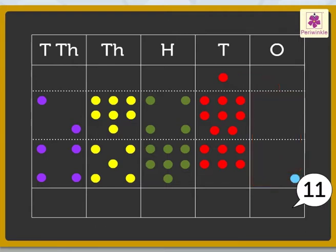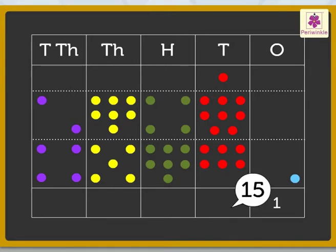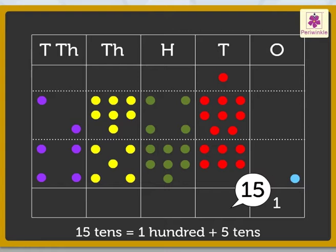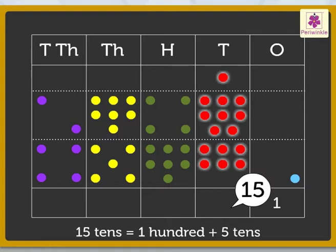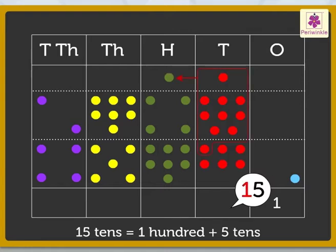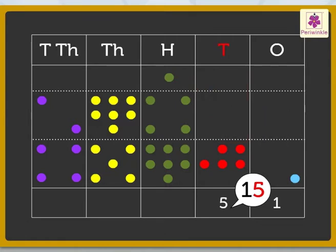Next, add the tens: one red dot plus eight red dots plus six red dots is equal to fifteen tens. We know that fifteen tens is equal to one hundred and five tens. Therefore, we regroup fifteen tens as one green dot and five red dots, so we get five tens.